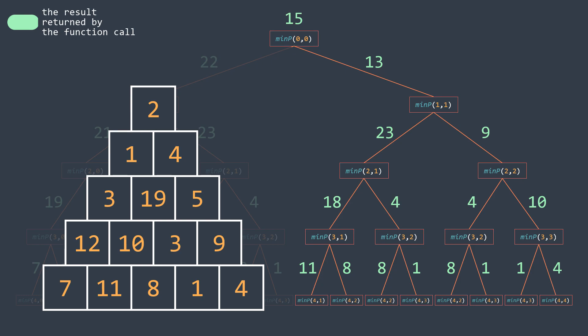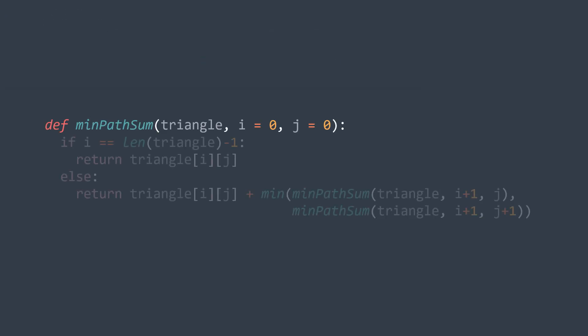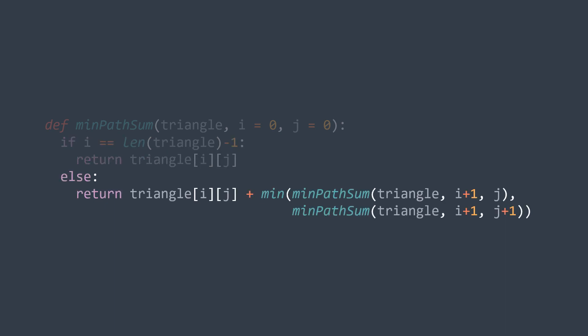For the code, we need a recursive function that takes the triangle and i, g — the coordinates of the actual cell. We start at the first cell of the first row, so their initial value is 0. The base case is when we are on the last row, i.e., when i equals length of triangle minus 1; in that case we return triangle[i][g]. Otherwise, in the recursive case, we return triangle[i][g] plus the minimum between calling the same function with i+1, g and calling it with i+1, g+1.